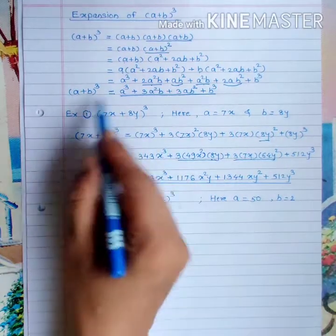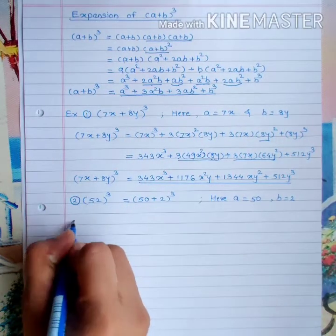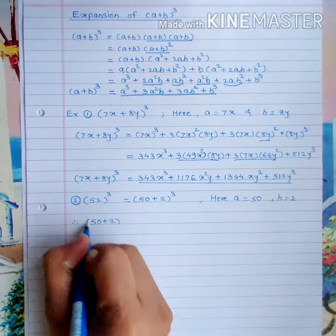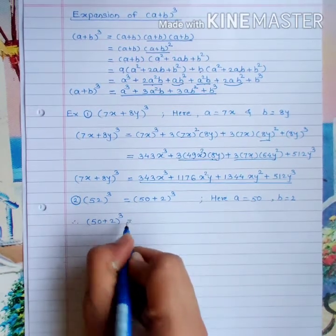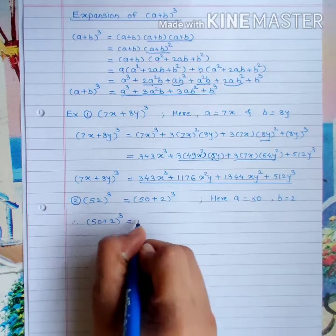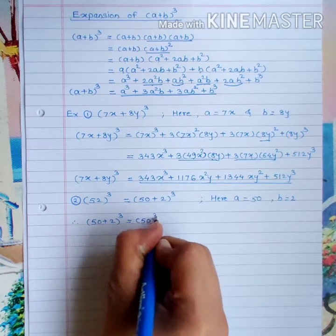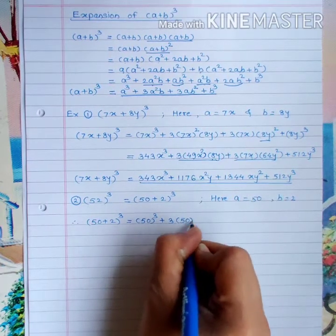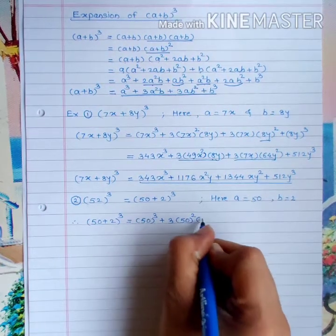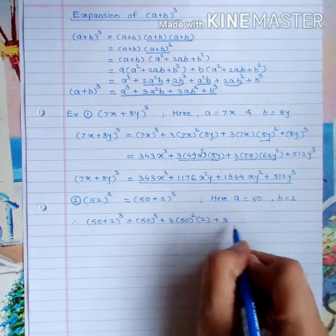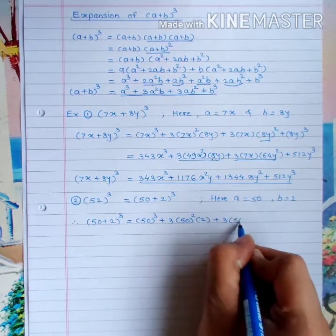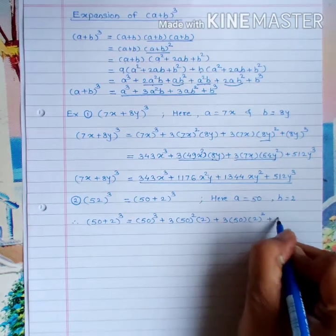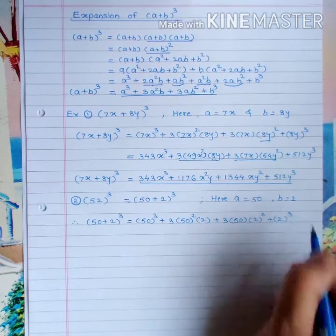Substituting values of a and b in the expansion formula: (50 + 2)³ = 50³ + 3 × 50² × 2 + 3 × 50 × 2² + 2³.